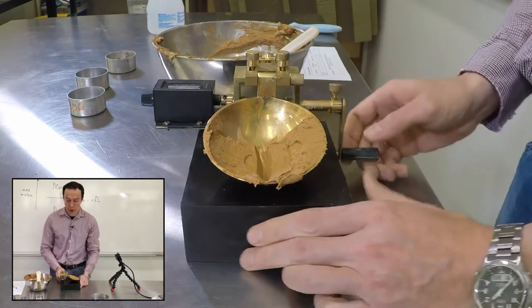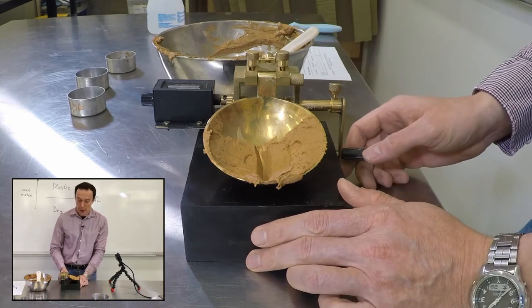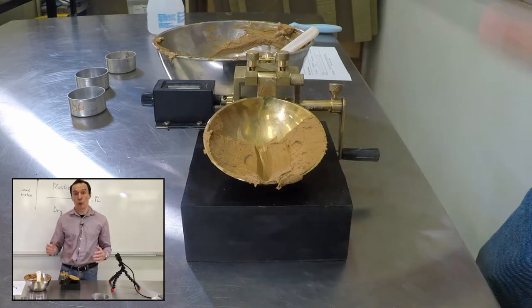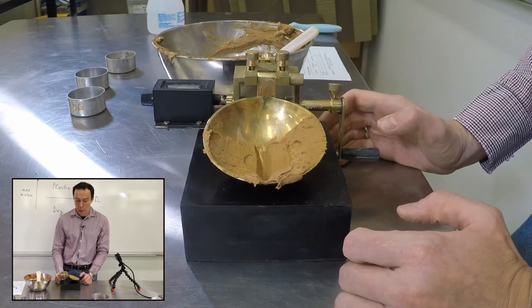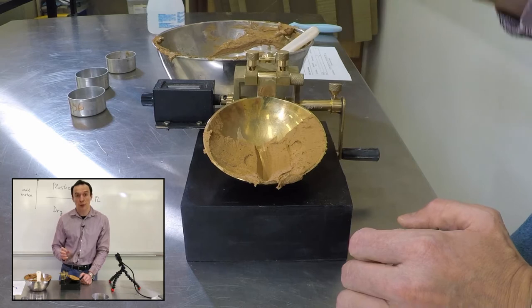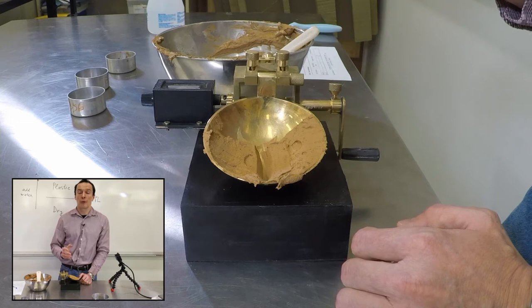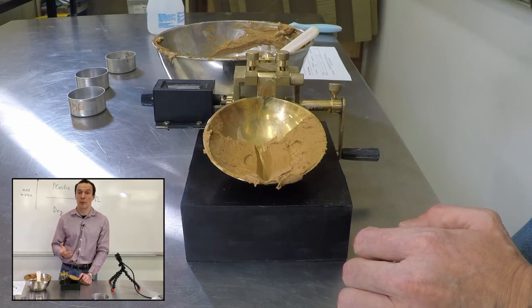Now I'm going to rotate the handle at two revolutions per second. The soil will slide down, and when it closes about 13 to 15 millimeters, we'll stop the test. We'll count the number of blows to that moment and record the data.